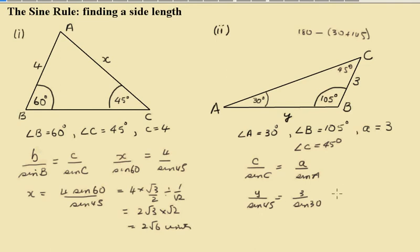So multiplying both sides by Sine of 45, we get that y equals 3 Sine of 45 over Sine of 30. So y equals 3 times 1 over root 2 divided by Sine of 30, which is a half.